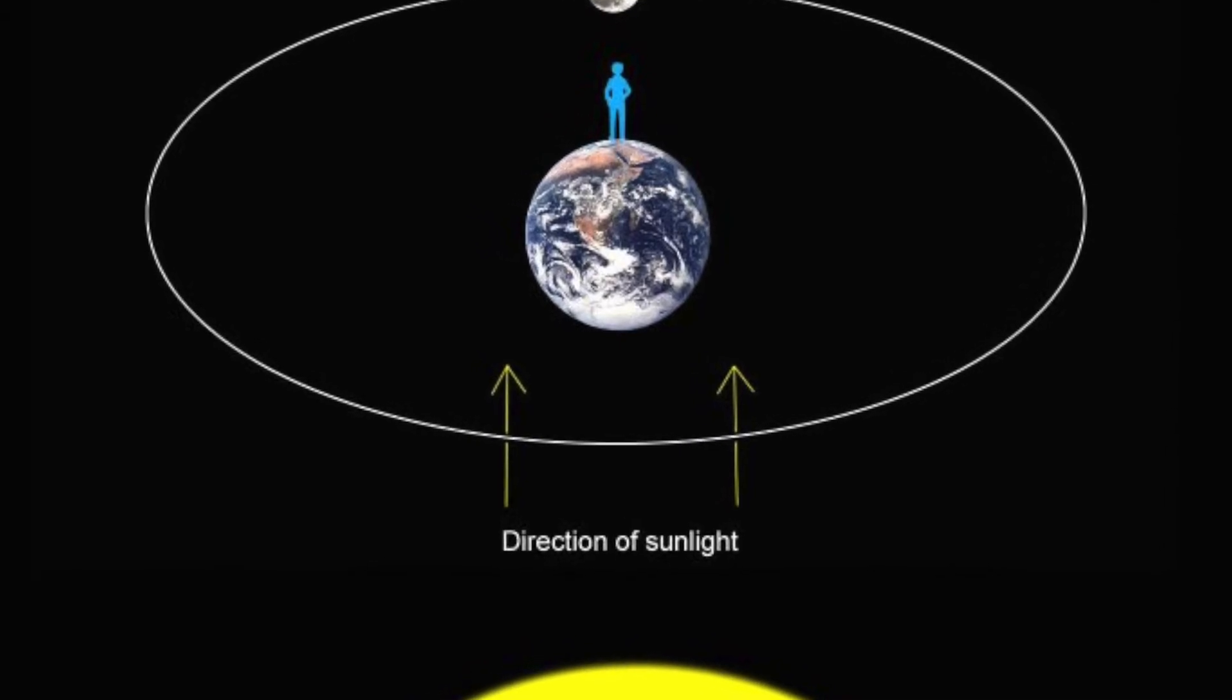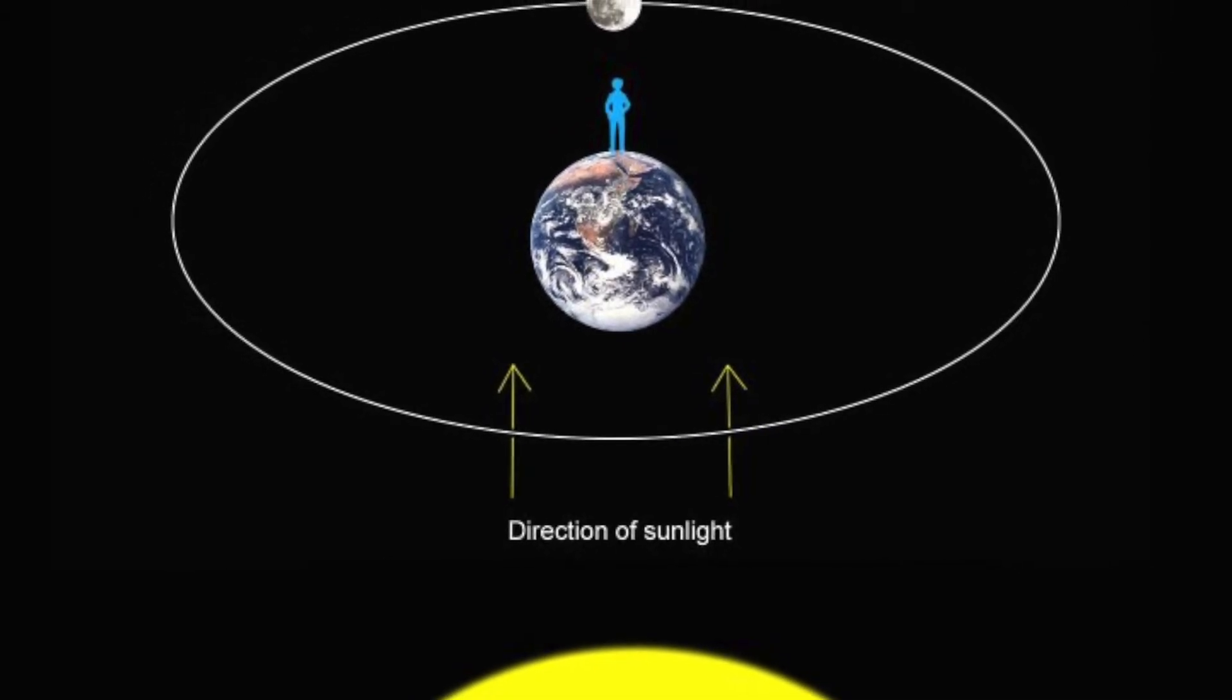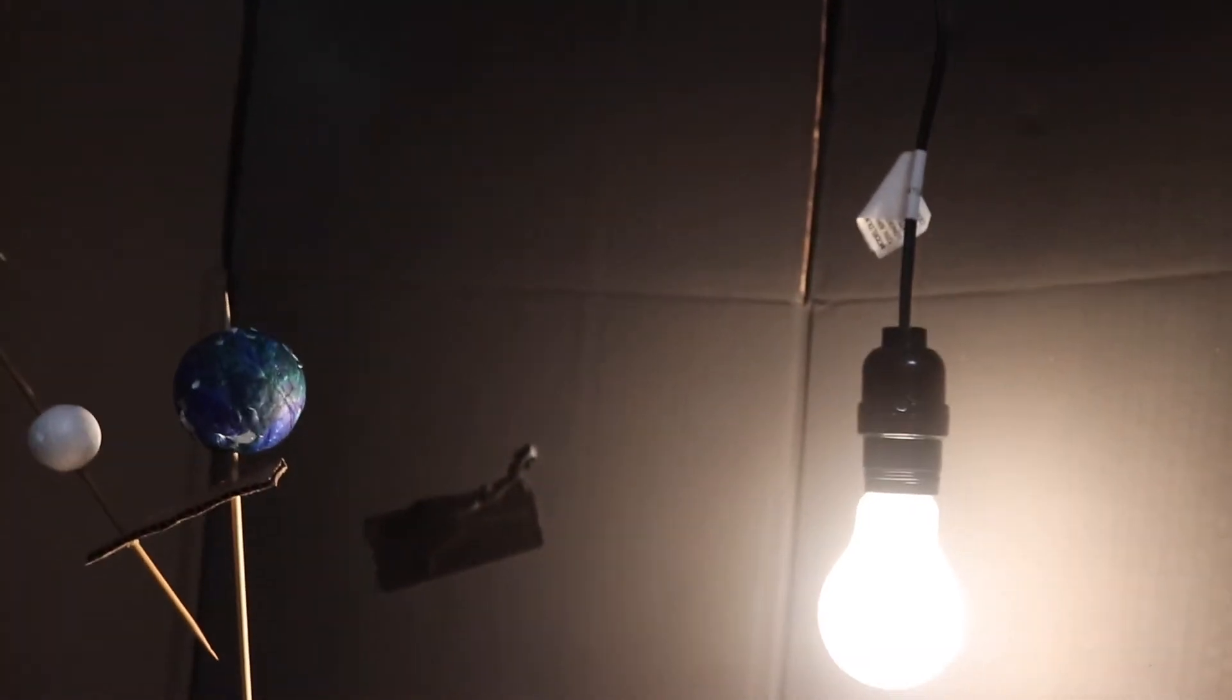When the moon is behind the Earth, but high or low enough relative to the Earth-Sun plane, the view from the Earth is a full moon.